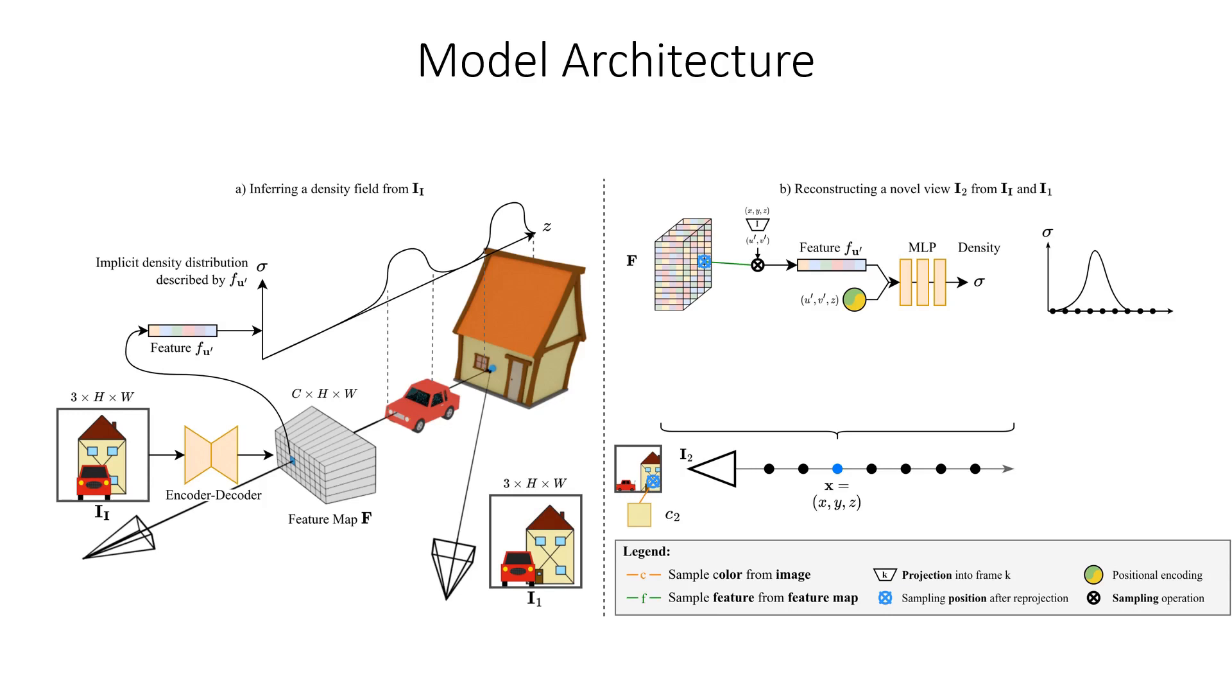In contrast to a neural radiance field, our density field does not store color. Therefore, to still perform volume rendering, we again reproject the point and sample color directly from the image. Note that unlike the feature sampling, we can also sample color from any other available view, for example image 1 in the illustration. This is very important during training.